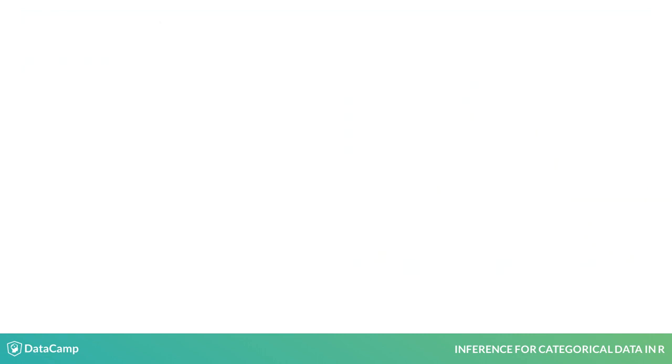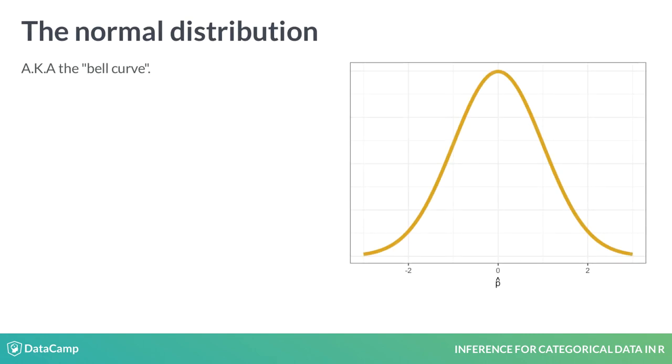That approximation is the normal distribution, also known as the bell curve. A useful result in mathematics says that if you have independent observations and a sufficiently large sample size, then p-hat will follow a normal distribution with a known standard deviation.